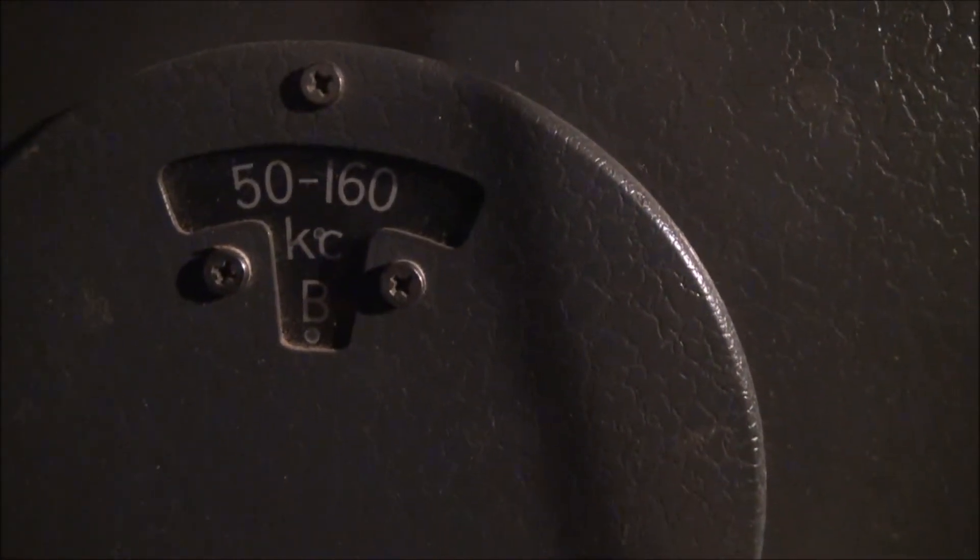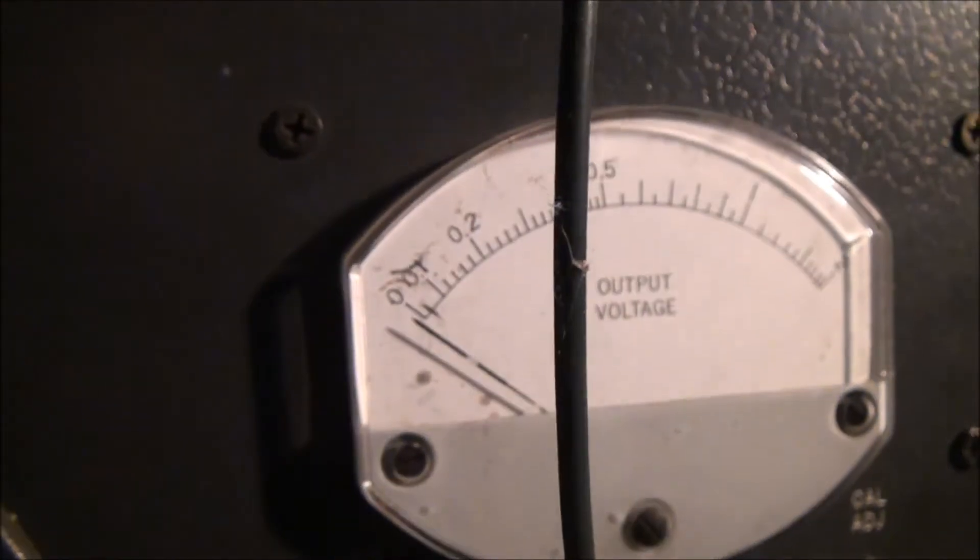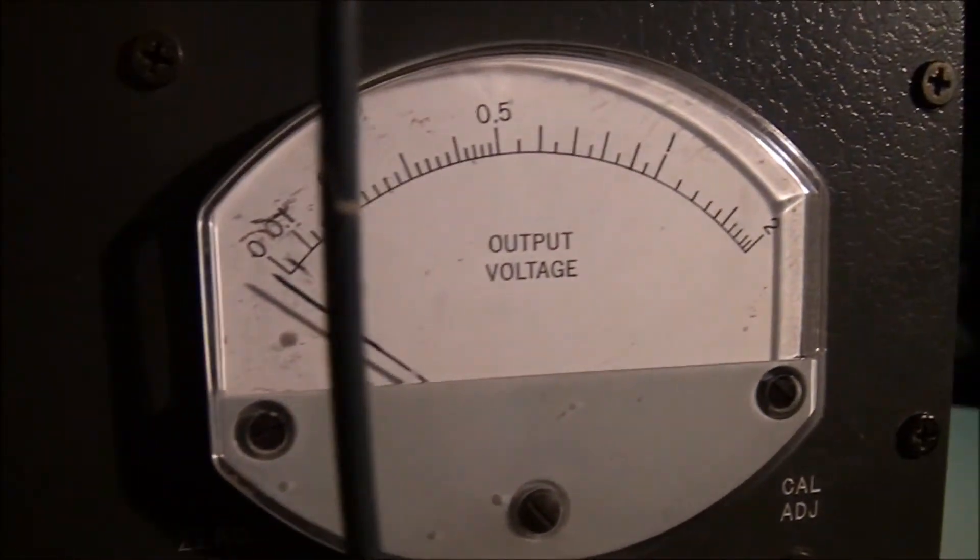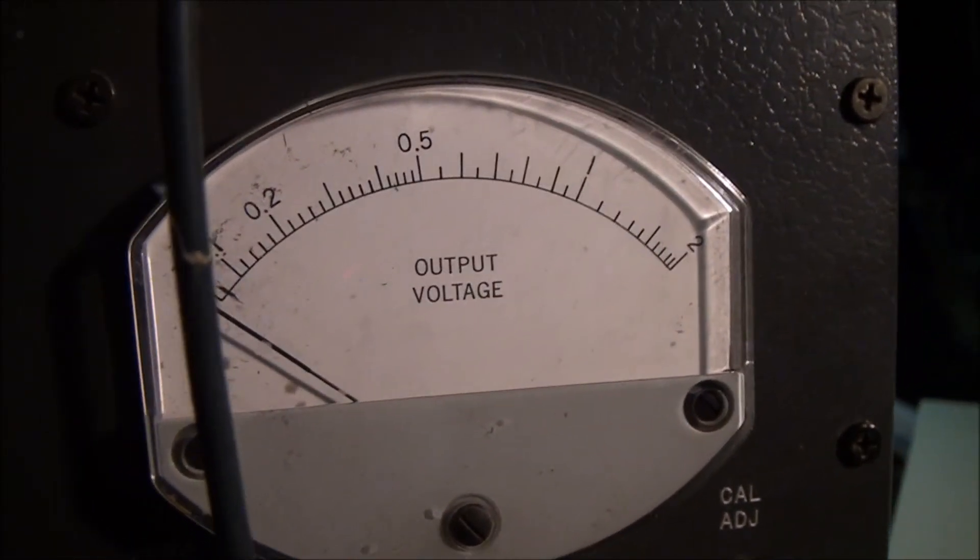What I did find is a couple of ranges not getting any output at all. On the 50 to 160 kilocycles and the 16 to 50 kilocycles, there's no output going on at all with it. So it's probably a fault in the instrument, something that needs to be checked out. But all the rest of the ranges seem to be working with reasonable accuracy.